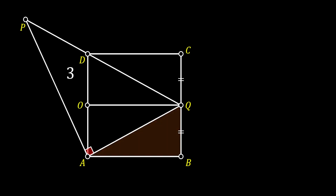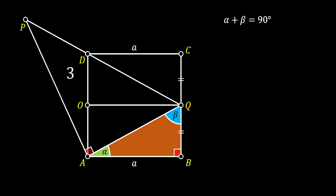Let's notice the right-angled triangle A, B, Q. Let's label the two acute angles of this triangle as alpha and beta. Since this is a right-angled triangle, the sum of the angles alpha and beta is 90 degrees, and this is going to be important for later. If we label the side of our square as A, this means that the segments CQ and QB will have the length of A over 2, since Q represents the midpoint of the side of the square.